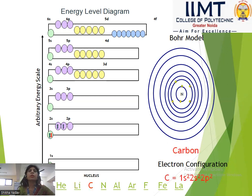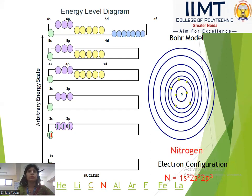Next is carbon. Carbon has atomic number 6: 1s², 2s², 2p². So in 1s we have 2 electrons, and in the 2s and 2p subshells we have 4 electrons. In carbon, 5 refers to the next element.